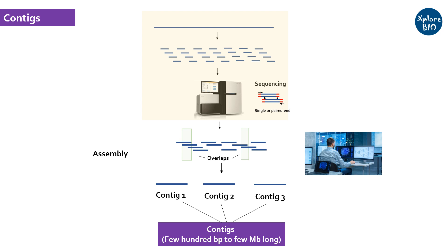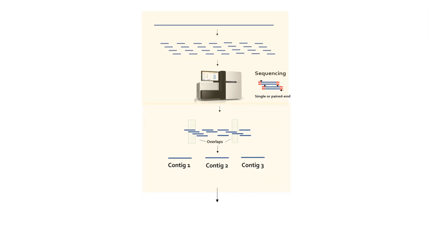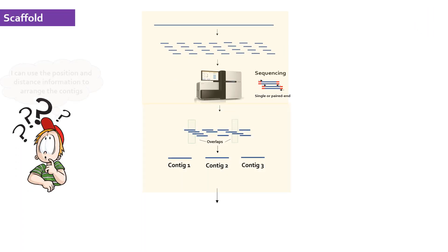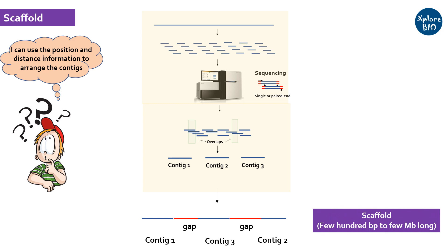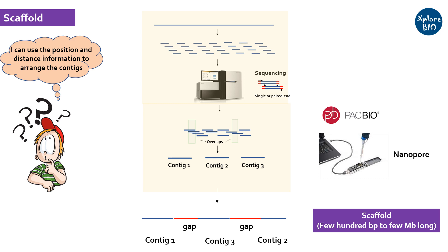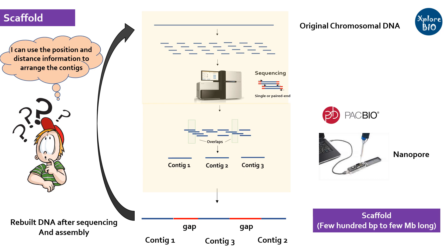But the contigs are not large enough to cover or represent the entire chromosomal DNA. If there is information about the relative position of contigs or distances among them, these contigs can be chained or connected together incorporating a few gaps to form much longer sequences termed as scaffolds. Gaps are represented by a few or more Ns in the scaffold. Using large read sequencing technologies like PacBio or Nanopore and better assemblers, the number of gaps can be reduced. Ideally, one scaffold should represent one chromosomal DNA with no missing sequence information or gaps.